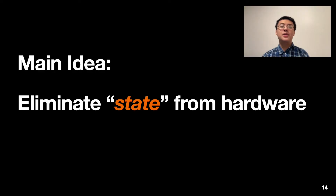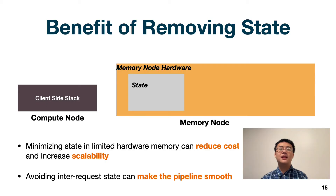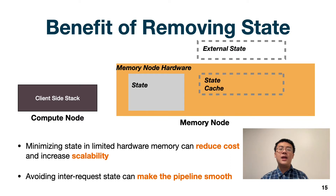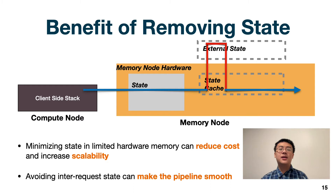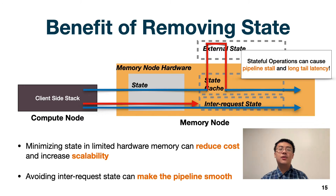Our main idea is to eliminate state as much as possible from the hardware. State, by our definition, is the metadata we need to store or access when handling in-memory requests. Why is eliminating state so important? First, storing state takes resources on the device, which greatly increases cost and limits scalability. If the size of state is larger than hardware capacity and we store it at external storage, any external access or cache miss would cause long-tail latency. Also, handling inter-request state can cause dependency between requests, stalling the whole processing pipeline. These are the main reasons for bad performance in existing server-based solutions, and avoiding them is key to providing low cost, high scalability, and stable tail latency.